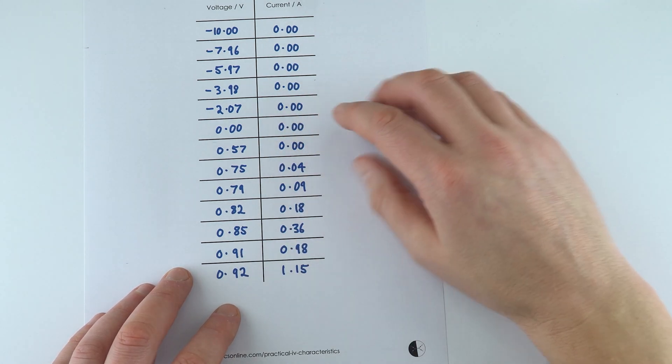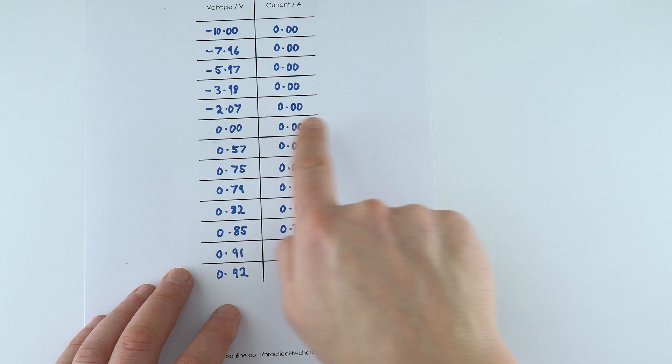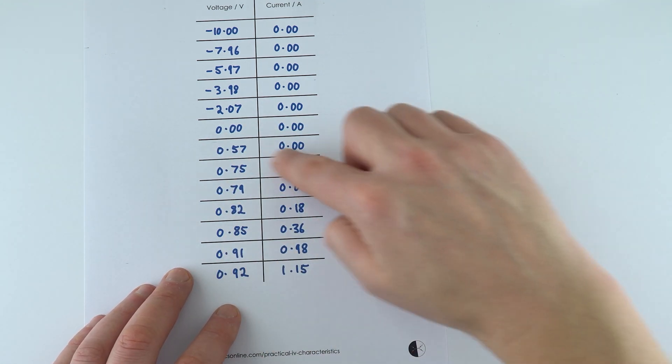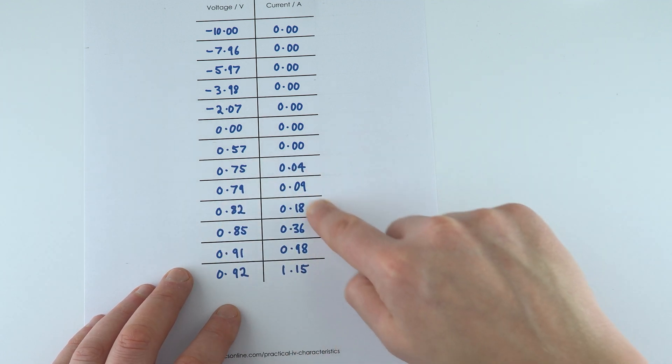So when it comes to plotting this, we're going to have current on the y-axis, voltage on the x-axis, and we can then start to plot the data. And this part of the graph here is where it gets really interesting.